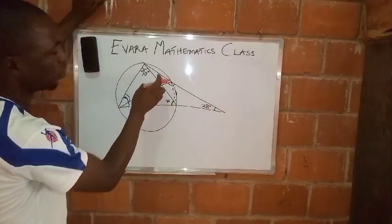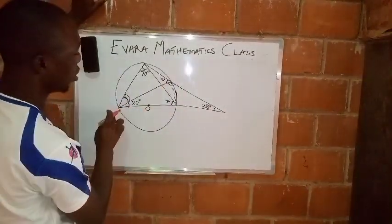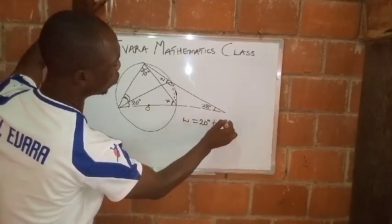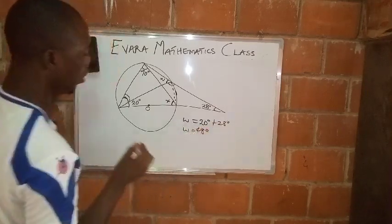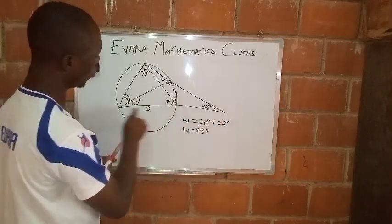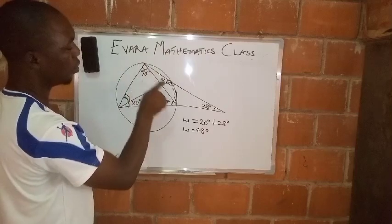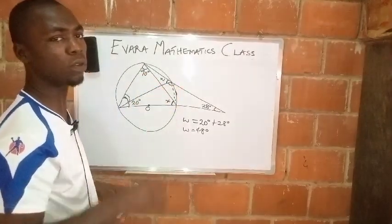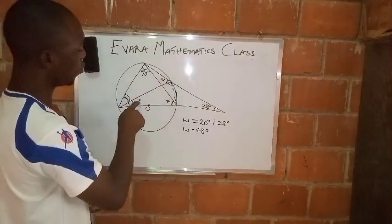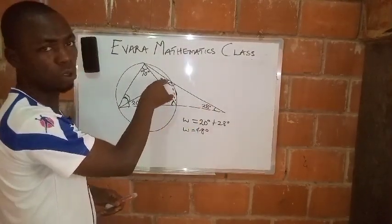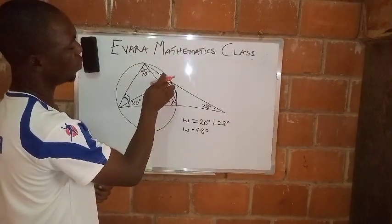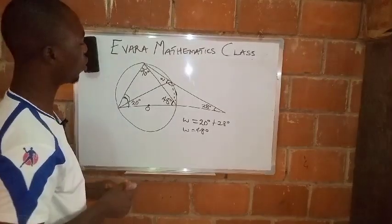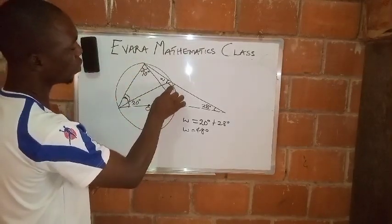Now this angle w is an exterior angle to this triangle. So w is equal to 20 degrees plus 28 degrees, which is 48 degrees. Remember, this line is extended, so this angle is an exterior angle to this triangle. An exterior angle equals the sum of the two opposite interior angles. So 20 plus 28 gives us 48 degrees. And automatically this angle is also 48 degrees, because they are angles subtended by the same chord.